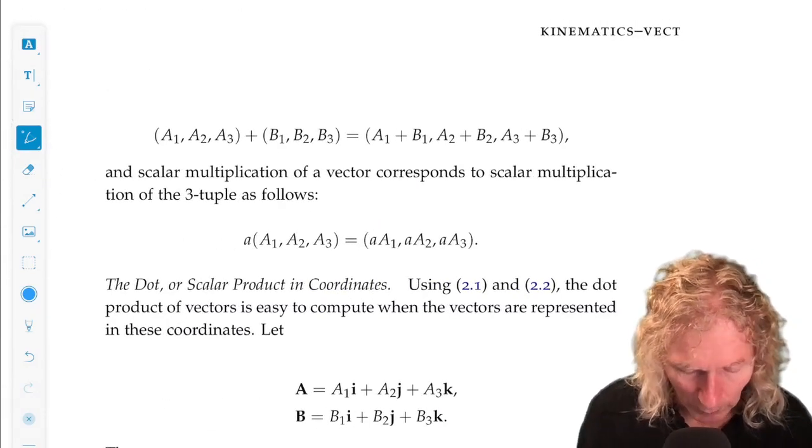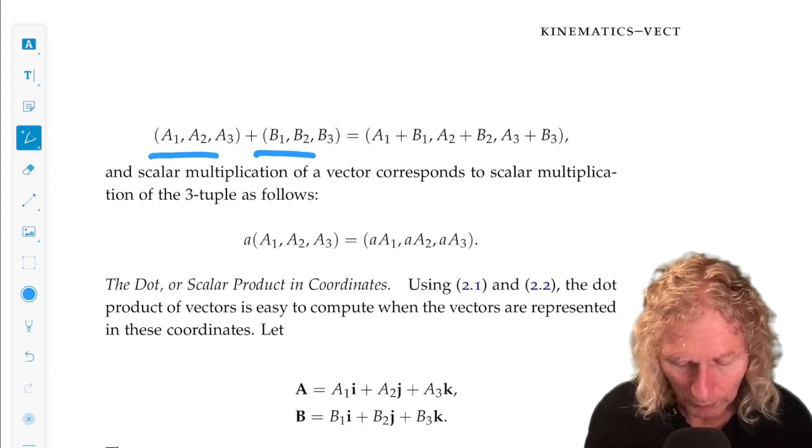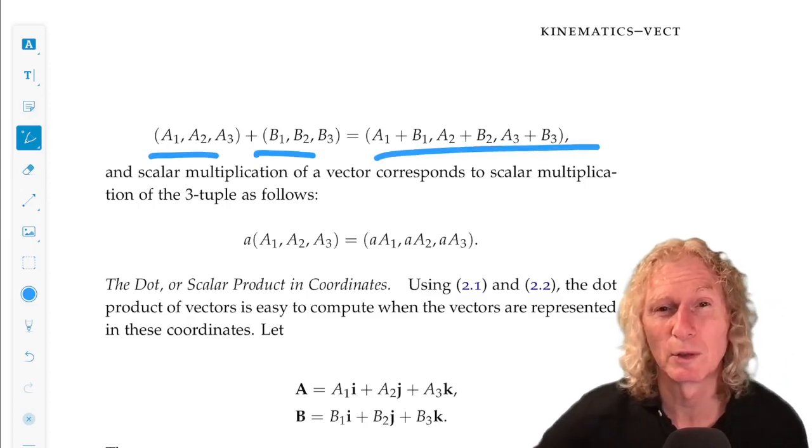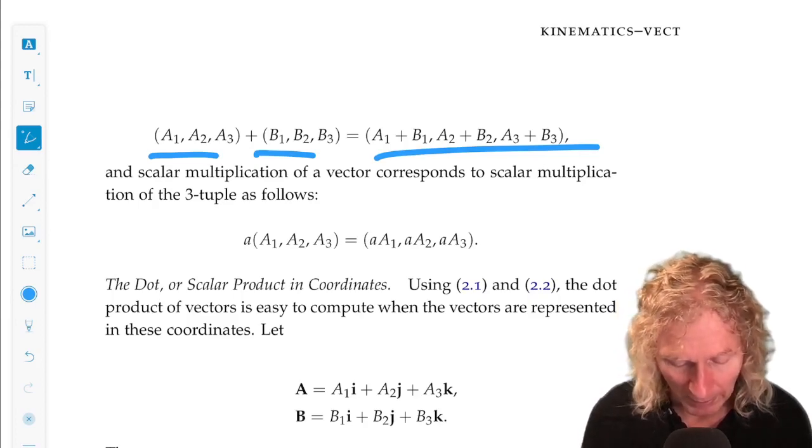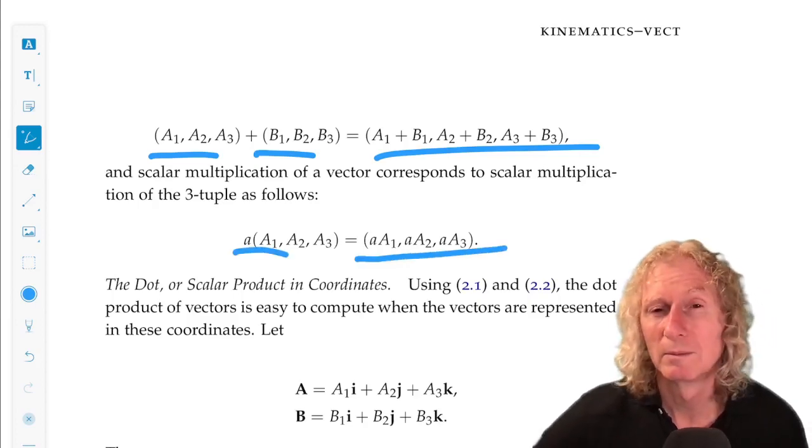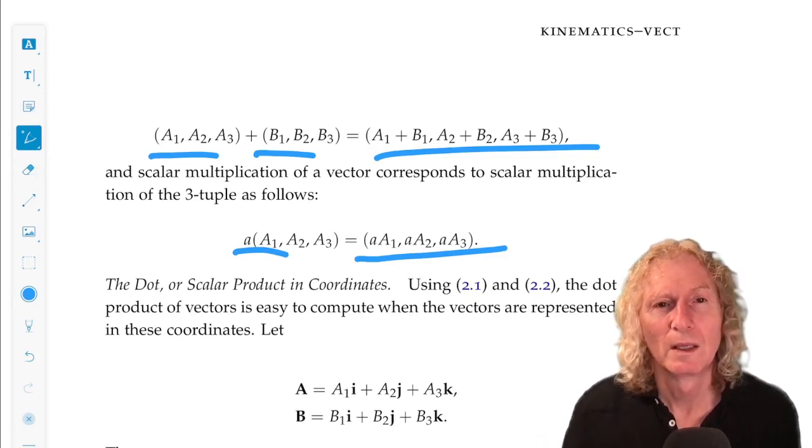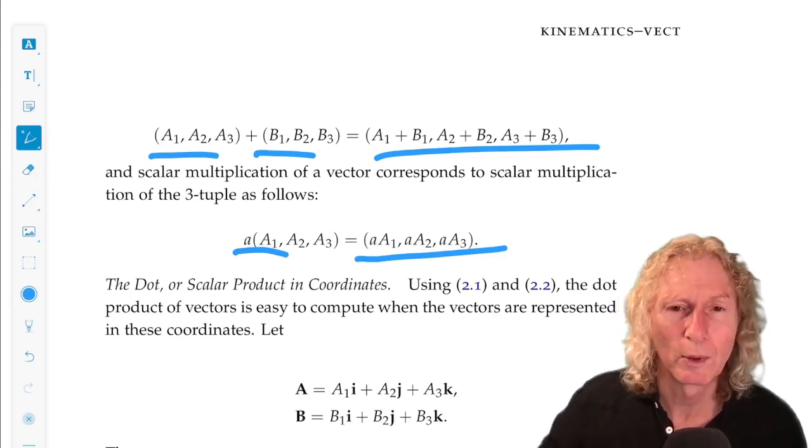And then if we wanted to add two vectors, we could add their three-tuples, and it's just the sum of each component. Multiply a vector by a scalar. Multiply each of the components by that same scalar. This is pretty straightforward, I think.